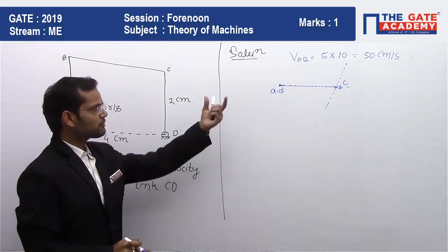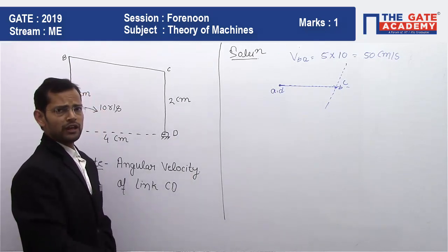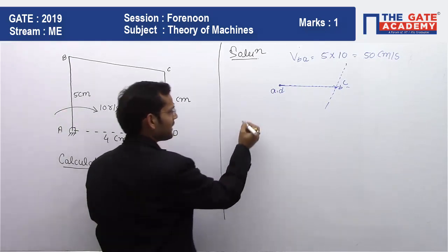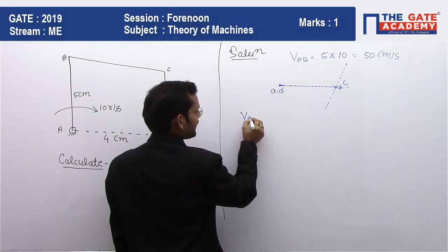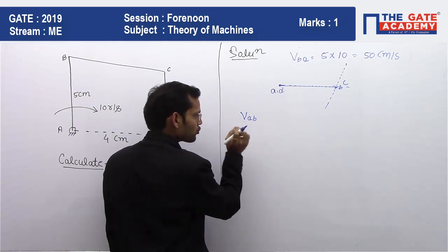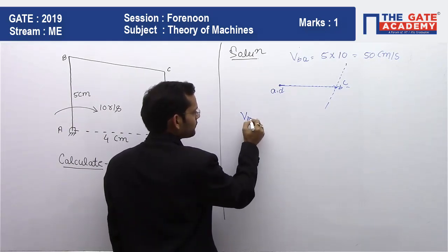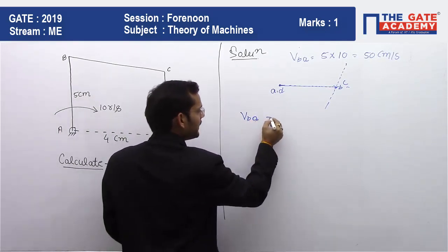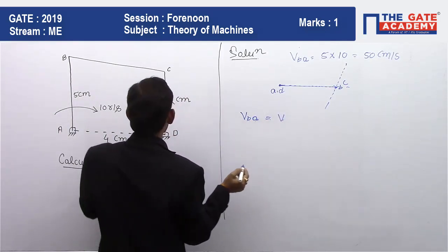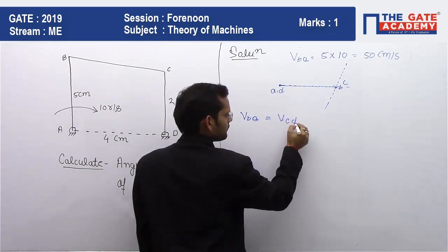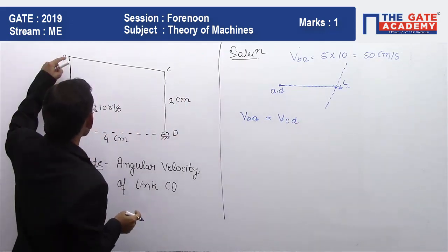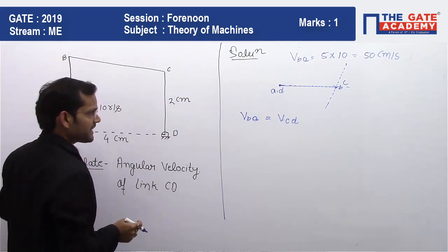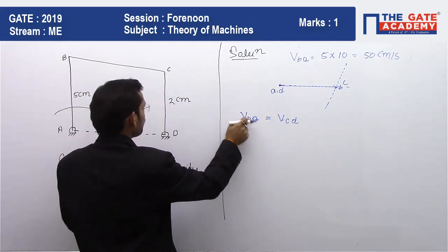From this velocity diagram, we can easily observe that the velocity vector for link AB and the velocity vector for link CD are equal. The velocity of point B with respect to A will be equal to